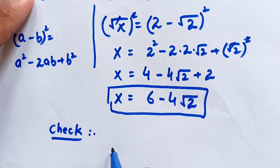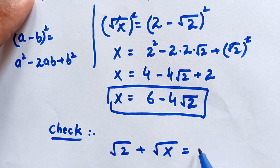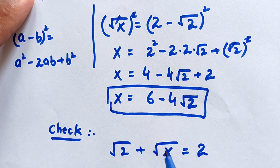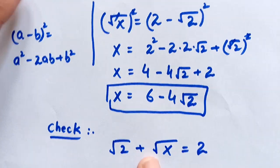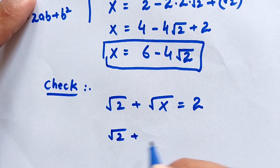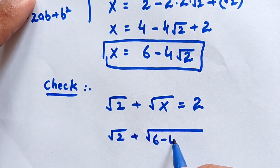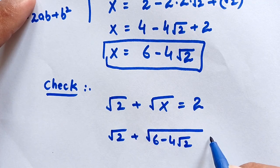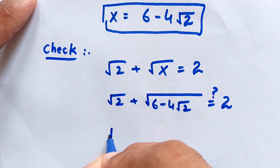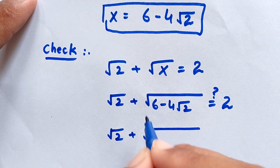Now let's check whether this answer is correct. The question is: square root of (2 plus square root of x) equals 2. We substitute the value of x, which is 6 minus 4 times square root of 2, giving us: square root of (2 plus square root of (6 minus 4 times square root of 2)) equals 2.